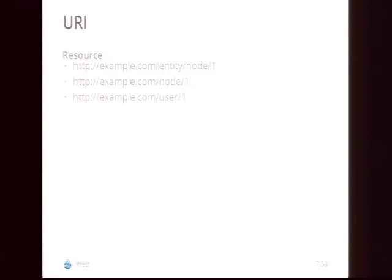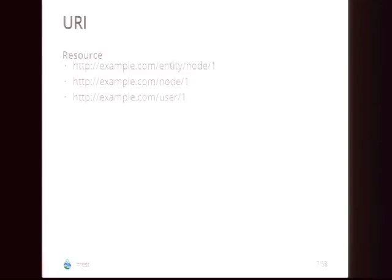When working with a REST service, you work with a set of URIs. URIs can be URIs for a resource — for example, entity/node/1 is the URI you interact with to work on a resource in Drupal. We're hoping to change it so you don't have to have 'entity' in the path. You can also have URIs for what are called link relations, which I'll talk about more later in the presentation.